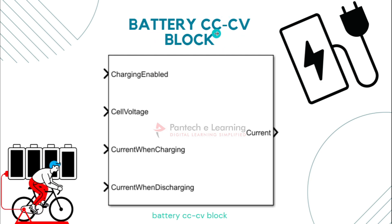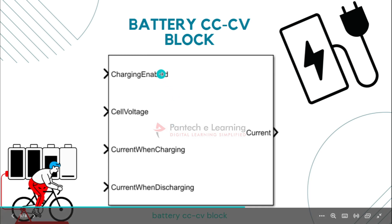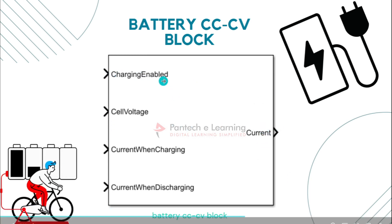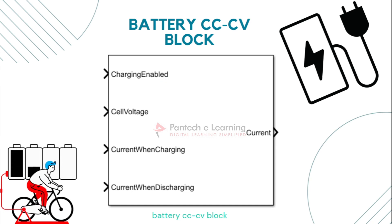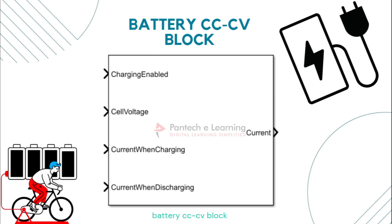First is the battery CC-CV block. These are all the input parameters and these are the output parameters. The first input parameter is charge enable. This parameter determines whether the battery is allowed to charge or not. When set to true, charging is enabled. When set to false, charging is disabled.